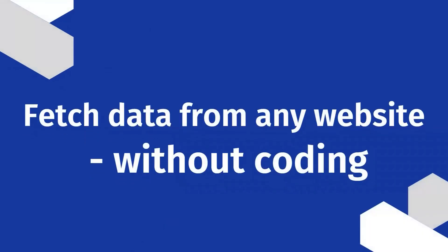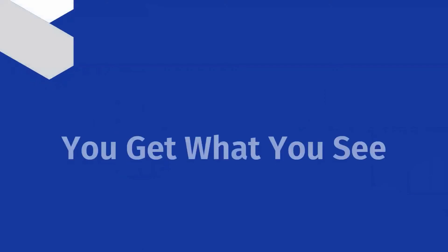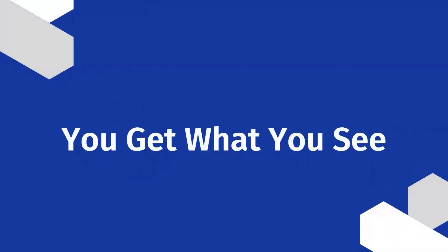For those of you who are new to Octopus, Octopus is a web scraping software that helps you quickly fetch data from any website without coding. Anyone can use Octopus to build a crawler in just minutes. What you see is what you get is the world we stand behind, meaning as long as the data is visible on a web page, you will be able to scrape it with our software.